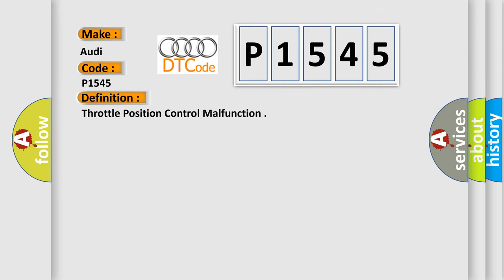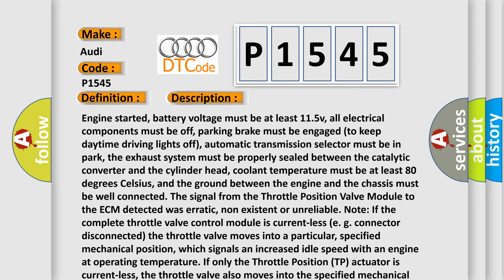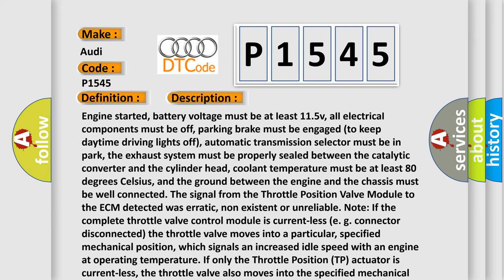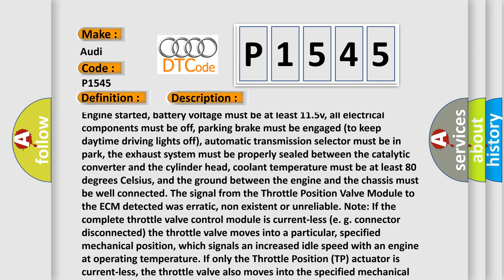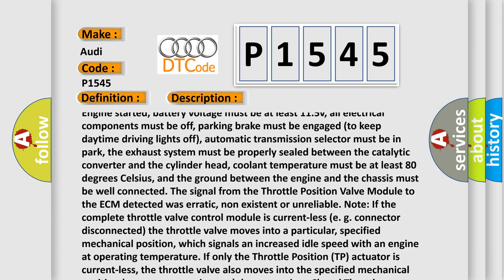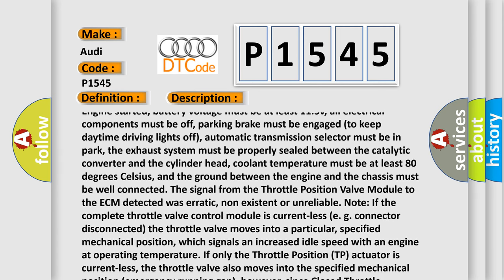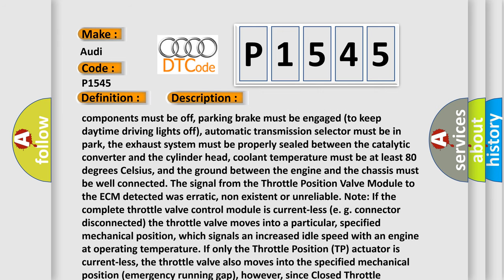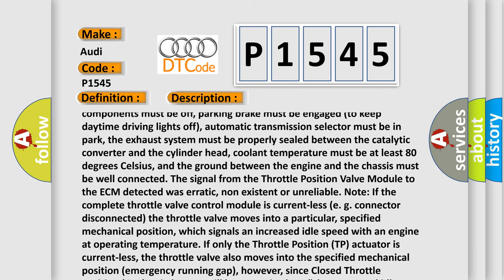The basic definition is: Throttle Position Control Malfunction. Here is a short description of this DTC code. Engine started, battery voltage must be at least 11.5V, all electrical components must be off, parking brake must be engaged to keep daytime driving lights off, automatic transmission selector must be in park, the exhaust system must be properly sealed between the catalytic converter and the cylinder head, and coolant temperature must be at least 80 degrees Celsius.